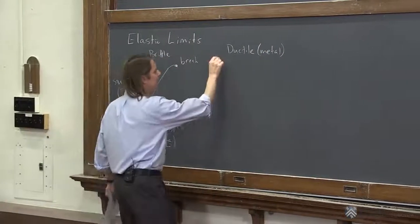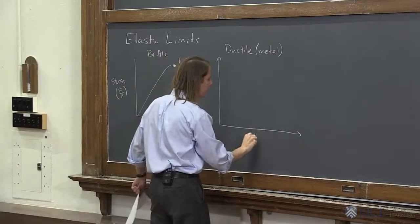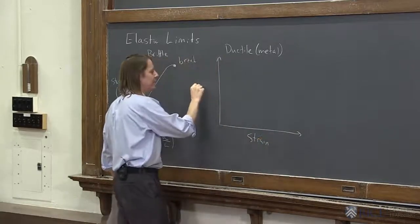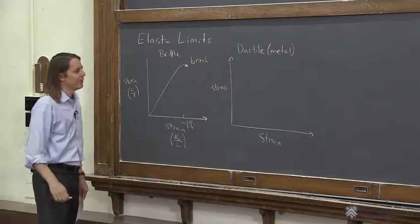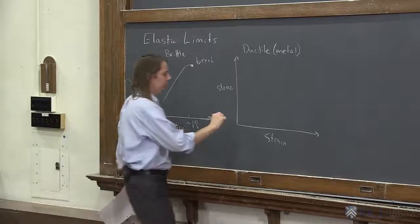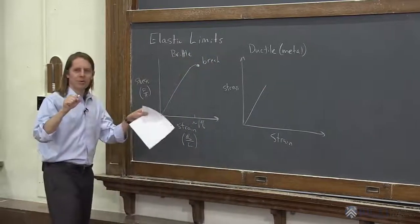So if we had the same thing, we had a stress-strain curve for a metal, strain, and here I'm just being general but we can imagine that it's for elongation. Let's say we're pulling it apart. It'll also be nice and linear here, like that. But then the metal will start to deform.